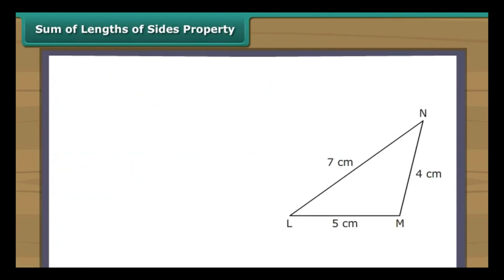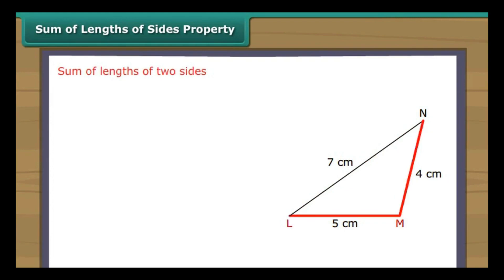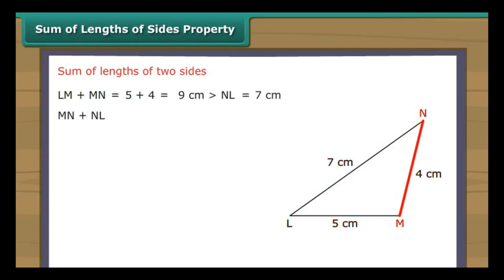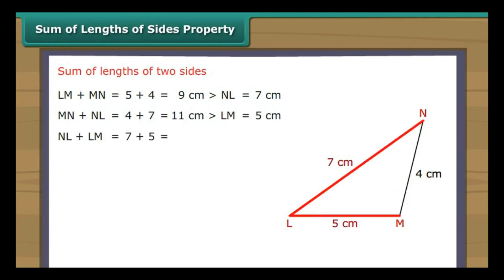In triangle LMN, LM is 5 cm, MN is 4 cm, and NL is 7 cm. LM plus MN equals 9 cm, which is greater than NL (7 cm). MN plus NL equals 11 cm, which is greater than LM (5 cm). NL plus LM equals 12 cm, which is greater than MN (4 cm).